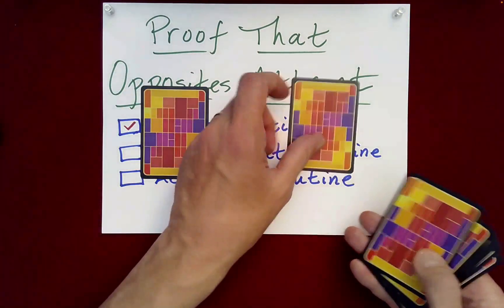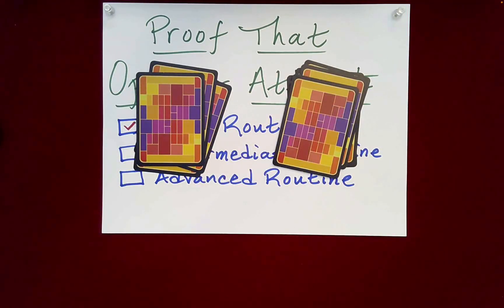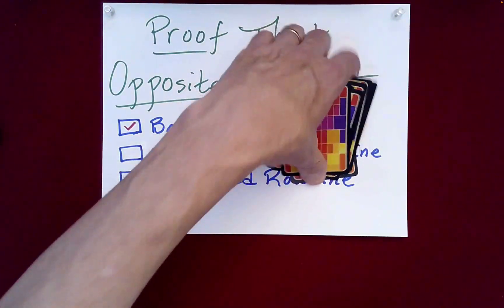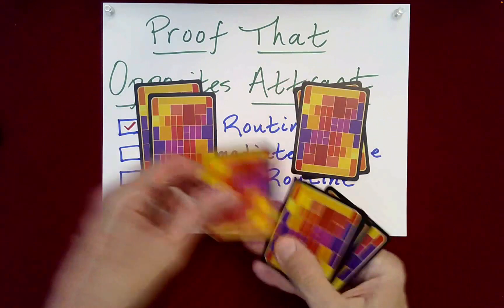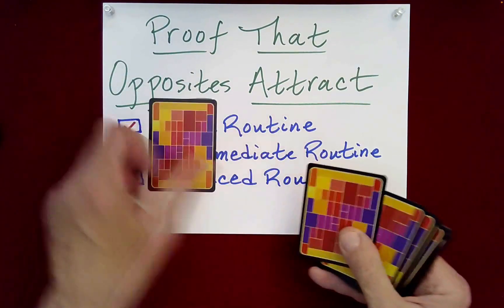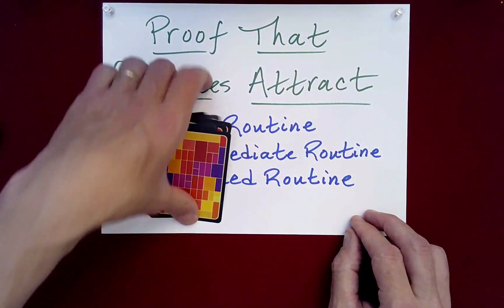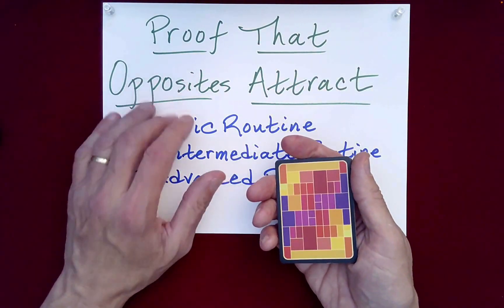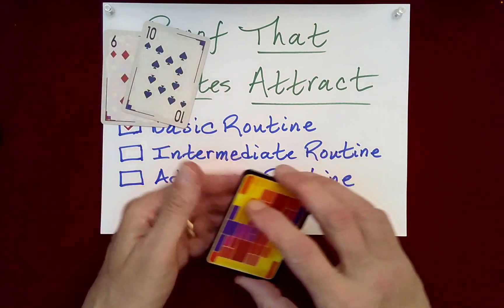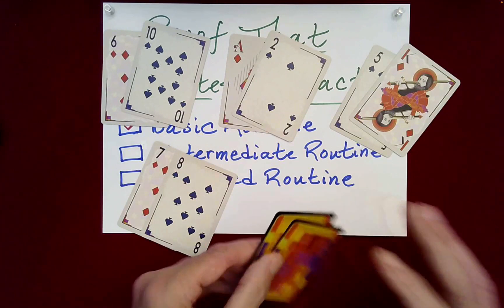Then we dealt out the cards into two piles and allowed the spectator to decide how to randomly stack these — left pile on top of the right or the right on top of the left. You can do as many of these as you like. Then, to confirm this aphorism — proof that opposites attract — we just Klondike pairs of cards to the table to confirm that is indeed the case. Opposites will always attract.